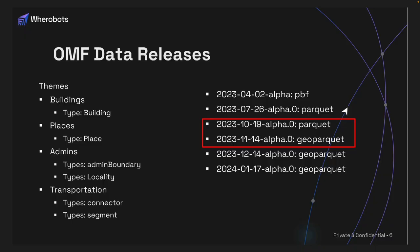OMF has released several data releases over the last year. Right now there are four main themes: buildings, places, admin boundaries, and transportation. OMF made their first release in April 2023 — the initial release was not in Parquet at all, it was in PBF. The next release in July 2023 was in Parquet but not GeoParquet. Until November 2023, they released the first data under GeoParquet.